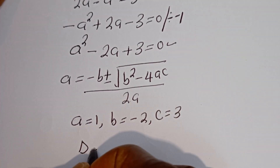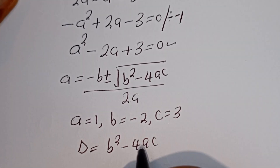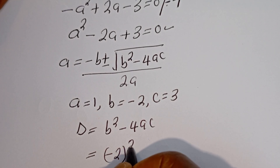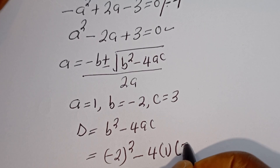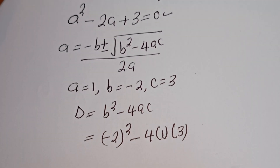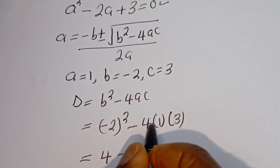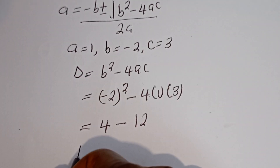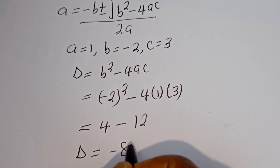Then the discriminant D is equal to B squared minus 4AC. This is equal to B is minus 2, then squared, minus 4 multiplied by A which is 1, multiplied by C which is 3. This is minus 2 squared, that is 4, minus 4 times 1 times 3 which is 12. Then D is equal to 4 minus 12, that is minus 8.